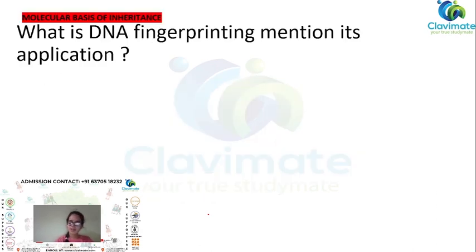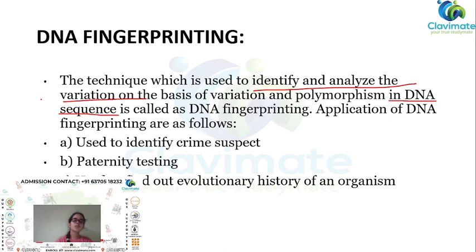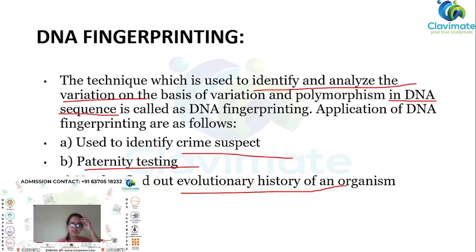What is DNA fingerprinting? DNA fingerprinting is a technique used to identify and analyze the variations in a DNA sequence — specifically, based on variations in polymorphism in the DNA sequence. Its applications include identifying crime suspects, paternity testing, and finding out the evolutionary history of an organism. These are some of the major roles where DNA fingerprinting is applied.